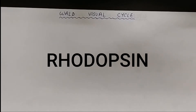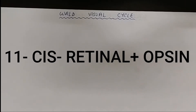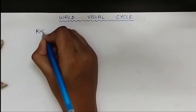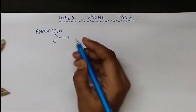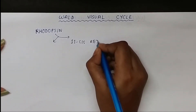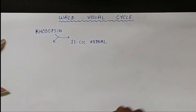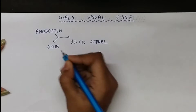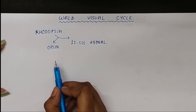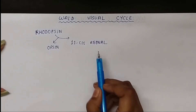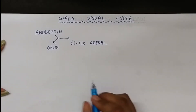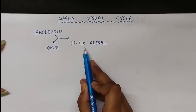Rhodopsin is a conjugated protein present in the rods. It contains 11-cis retinal and opsin. Rhodopsin has two components: 11-cis retinal and opsin. The opsin is responsible for generating nerve impulses when exposed to light, and 11-cis retinal, when exposed to light, changes into all-trans retinal. The connection between them: the aldehyde group of retinal is linked to the epsilon amino group of lysine of opsin.